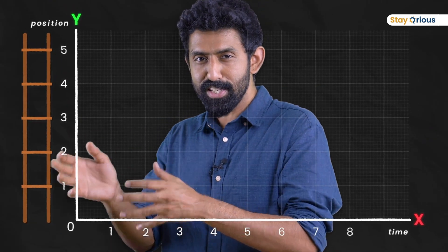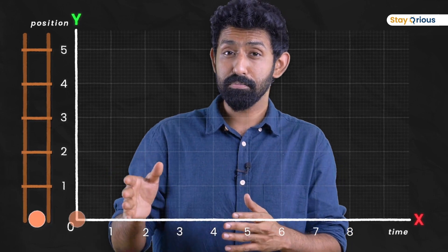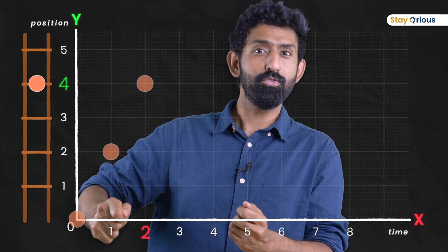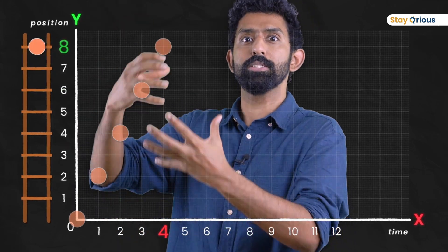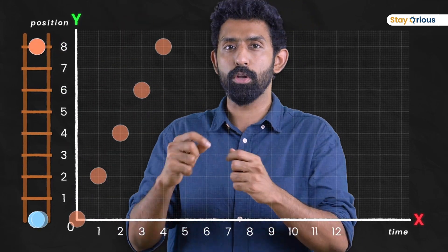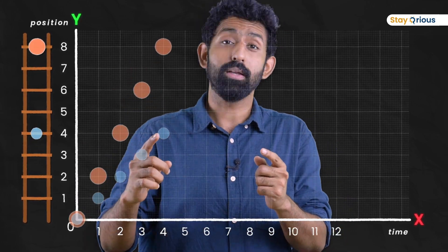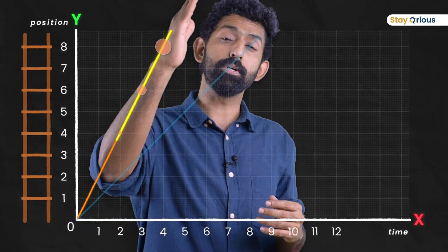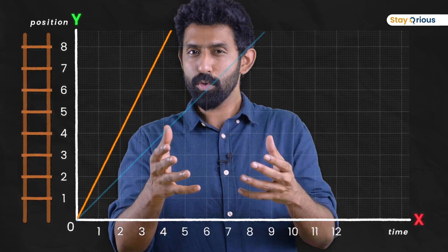What would the graph look like if it's two meters every second? A second later, it's two meters away instead of one. And another second later, it's two more meters away, so it's four meters away from where it began. Then six, then eight — its position is jumping in steps of two. It's like one ball is taking one step at a time; this one's taking two steps every second. If you connect the dots, you get a steeper line — the climb is higher.